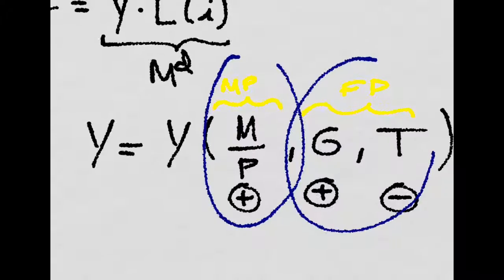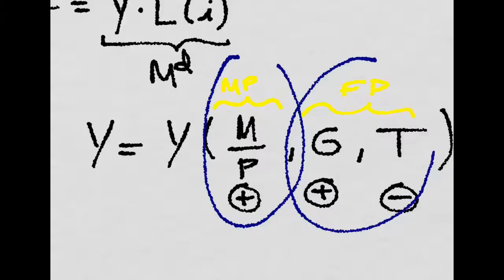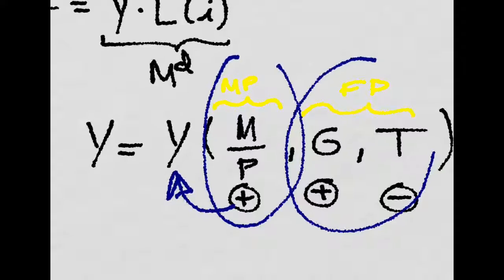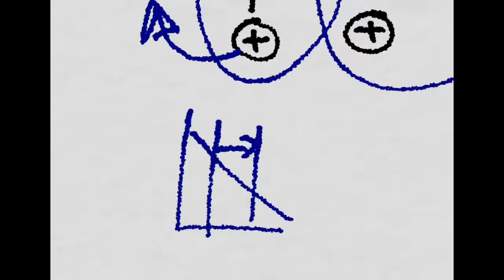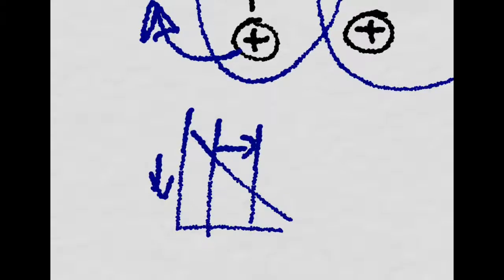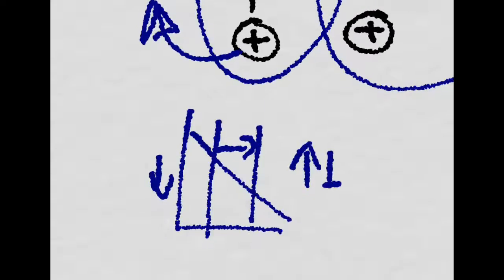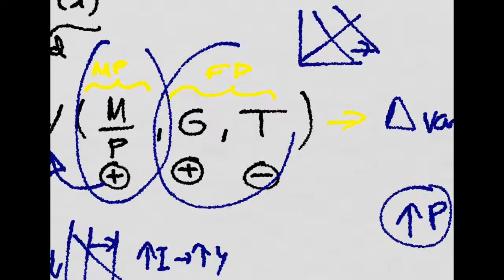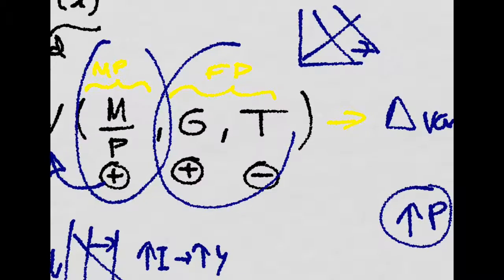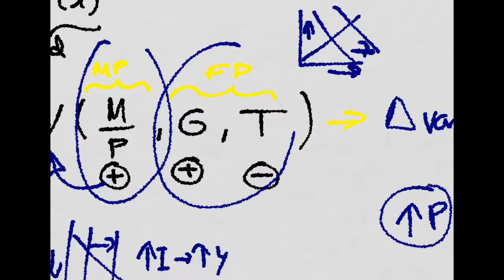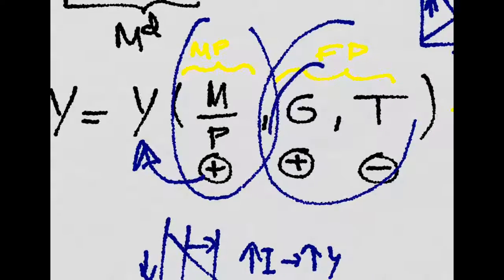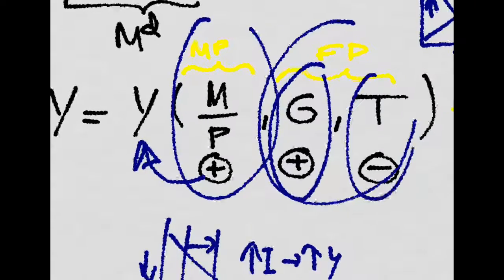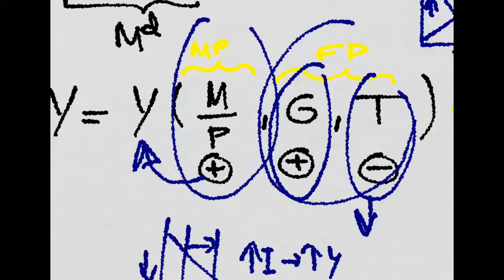If we have monetary policy, an expansion in the money supply will affect output positively. Remember, an expansion in the money supply brings down the interest rate, which increases investment, which will increase output. Now remember that an increase in government spending or cutting taxes will increase the IS, increase the interest rate, and increase output. That's why it depends positively on G and negatively on T. When taxes are cut, output increases.